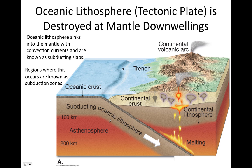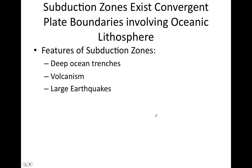Regions where the oceanic lithosphere subducts down into Earth's interior are known as subduction zones. You can see one here, where this oceanic lithosphere is converging and moving in this direction, converging with this continental lithosphere moving in that direction, and as a result this oceanic lithosphere subducts underneath it. There are several features found along every subduction zone: deep ocean trenches, volcanism, and large earthquakes.